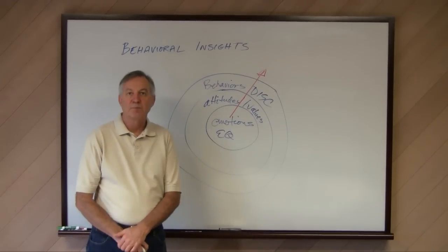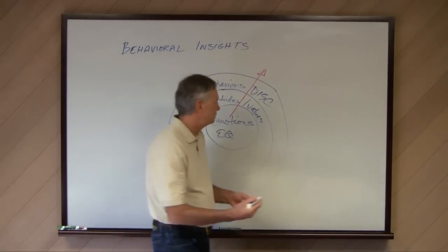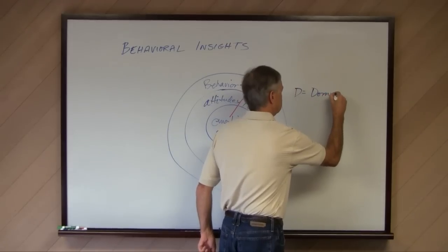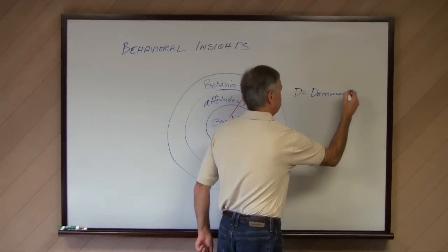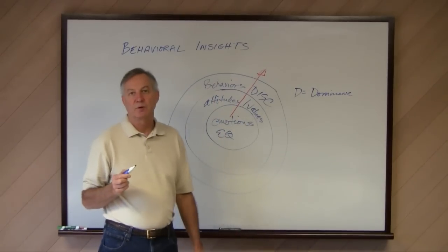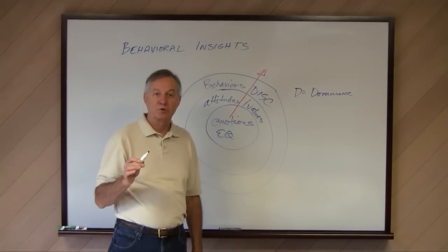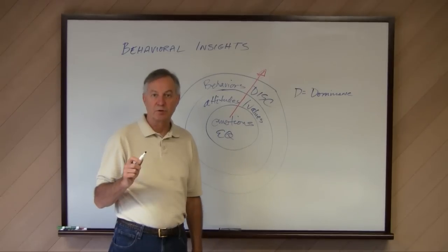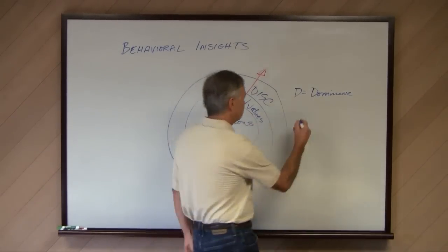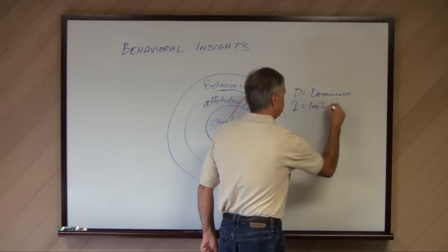The DISC assessment measures four components of human behavior. The first is dominance. Dominance is how you respond to problems and challenges. And in particular, it will show itself as being very results or action oriented in an individual. The second thing we measure is the I for influencing.